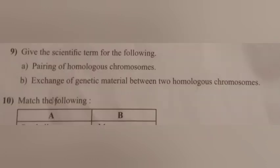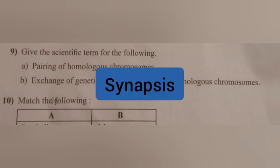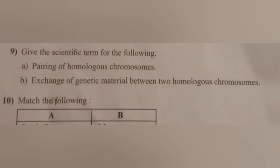Question 9. Give the scientific term for the following. A. Pairing of homologous chromosomes. Answer: Synapsis. B. Exchange of genetic material between two homologous chromosomes. Answer: Crossing over.